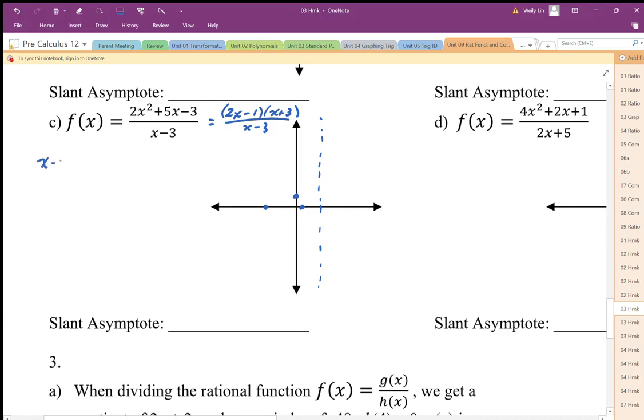So I'm going to divide x minus 3 into 2x squared plus 5x minus 3. Doing the long division here, I get positive 11x, so I end up with plus 11, bring down the minus 3, I get 11x minus 33.